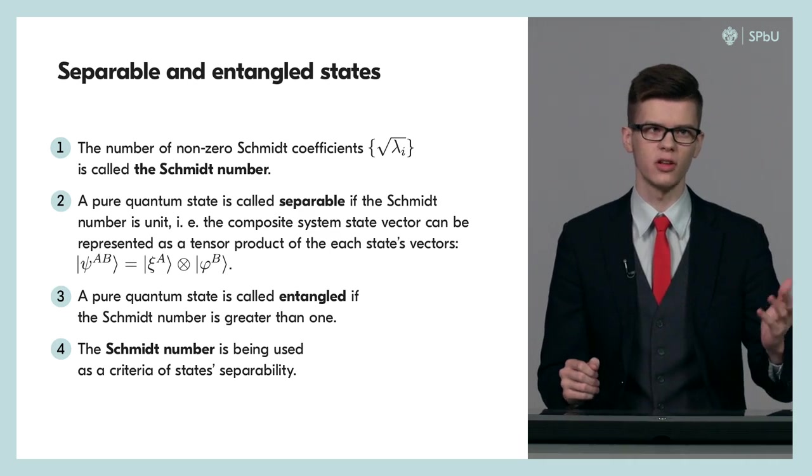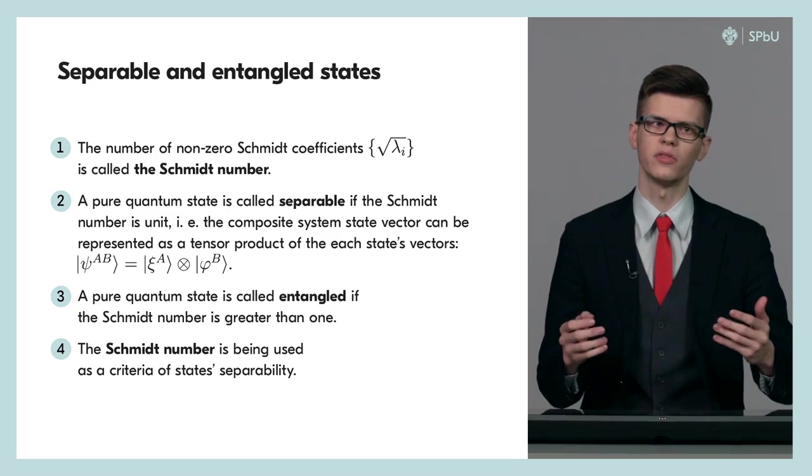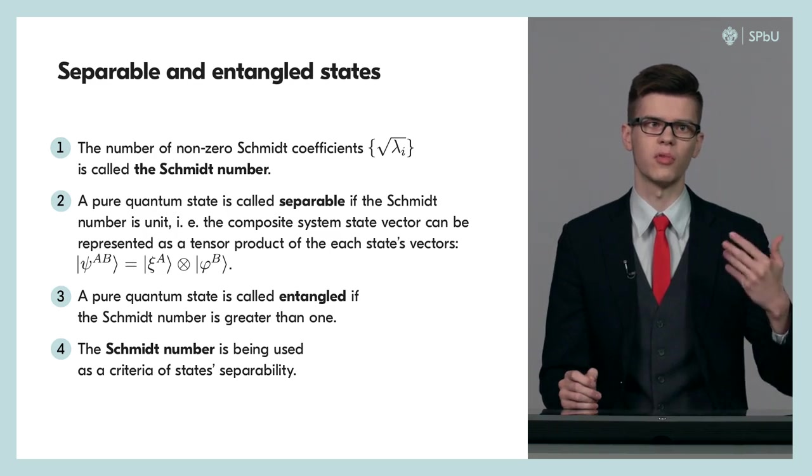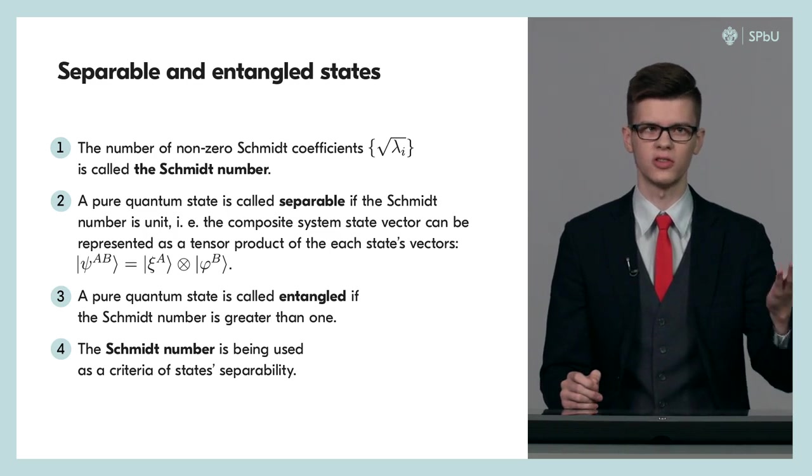If the Schmidt number is unit, then the pure quantum state is separable. And the composed system's state vector can be represented as a tensor product of state vectors corresponding to each part of the system.